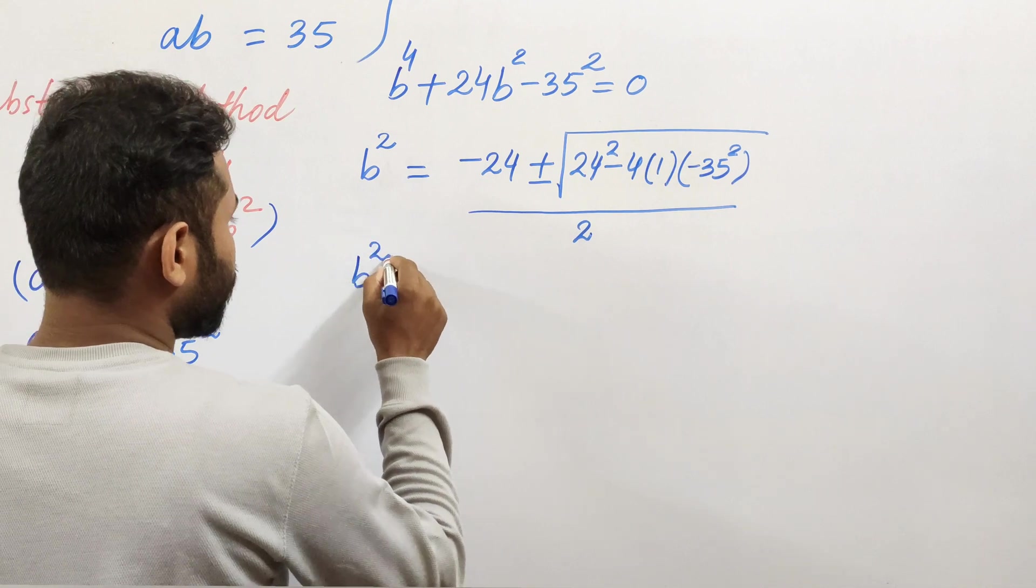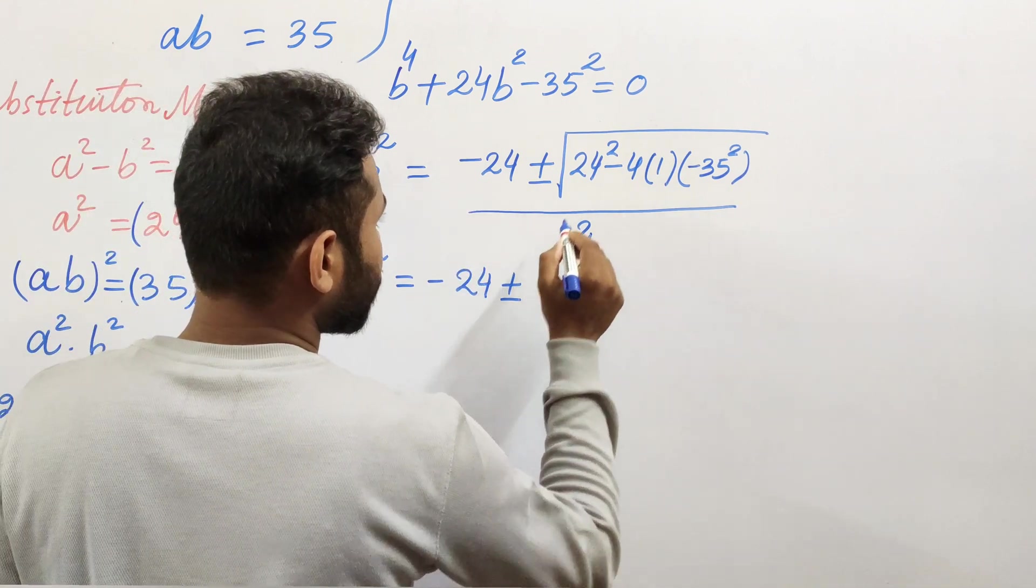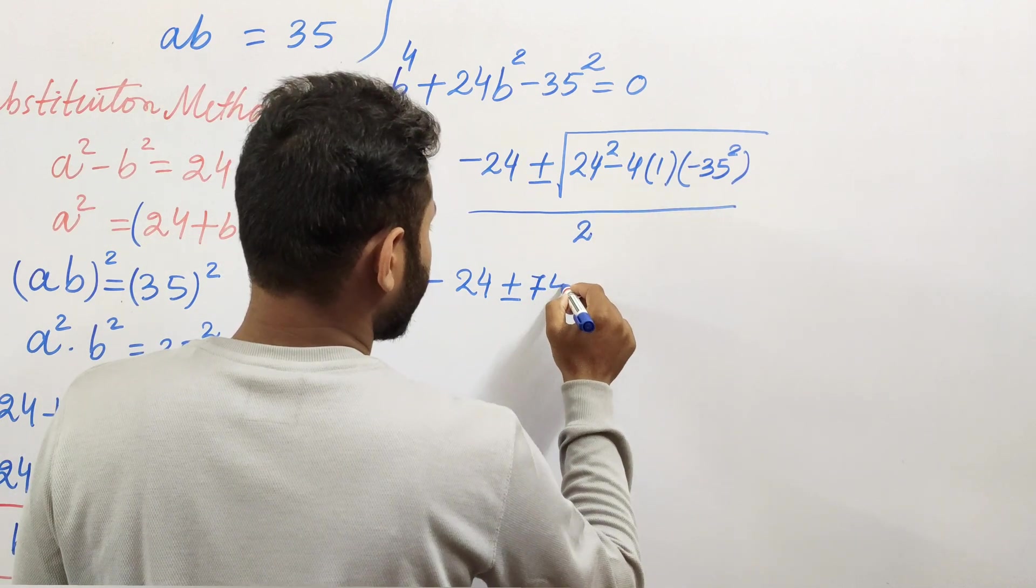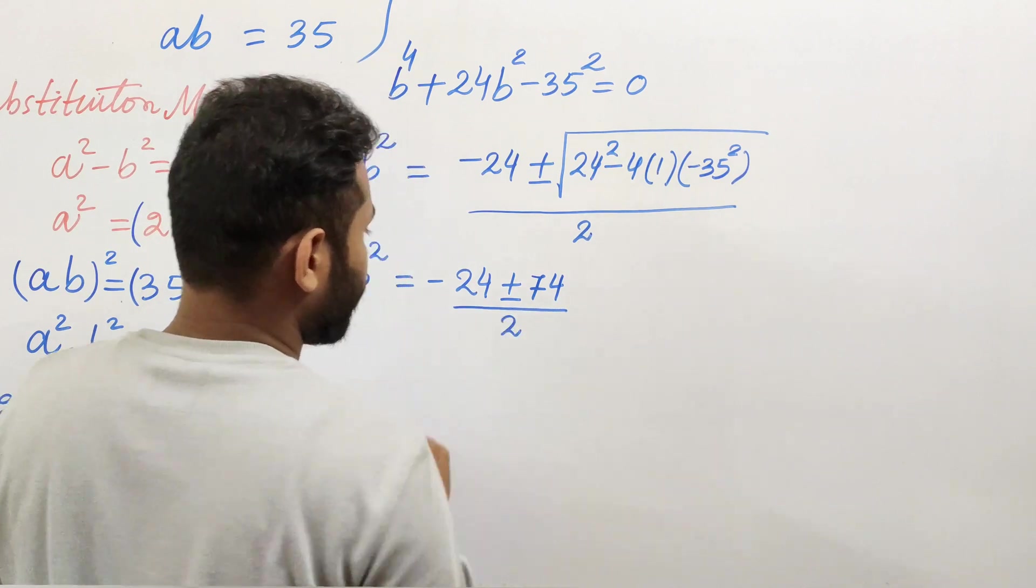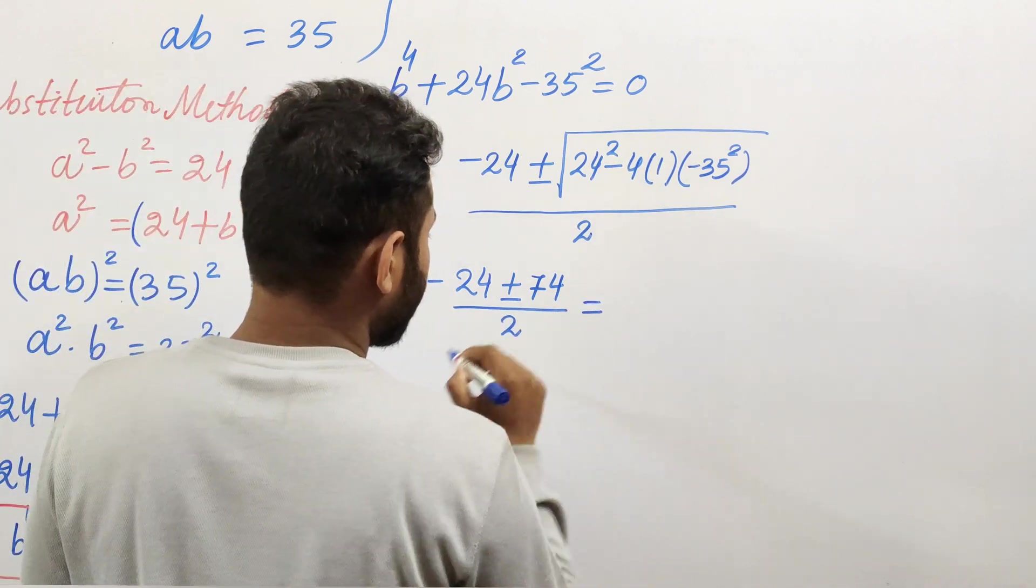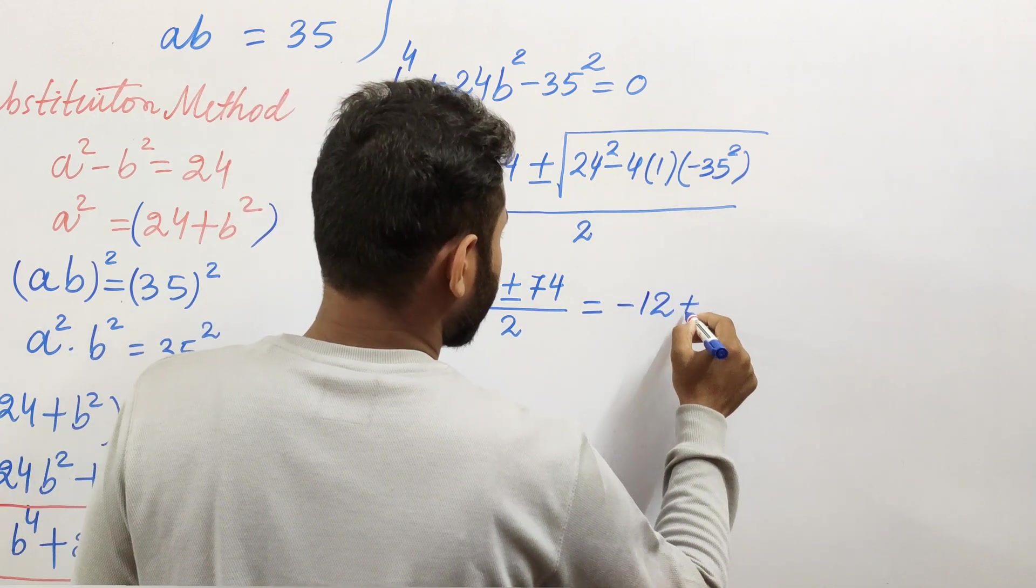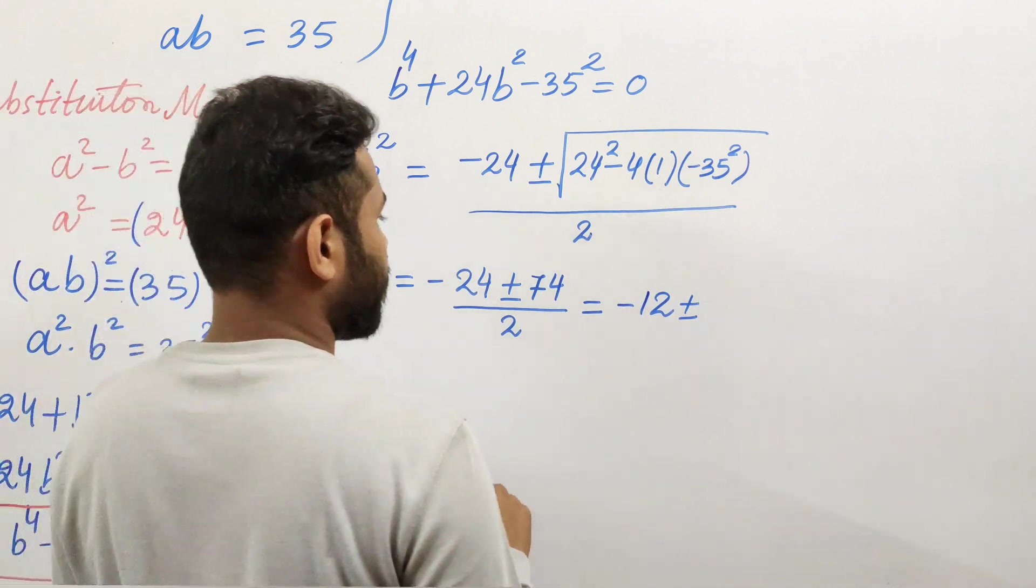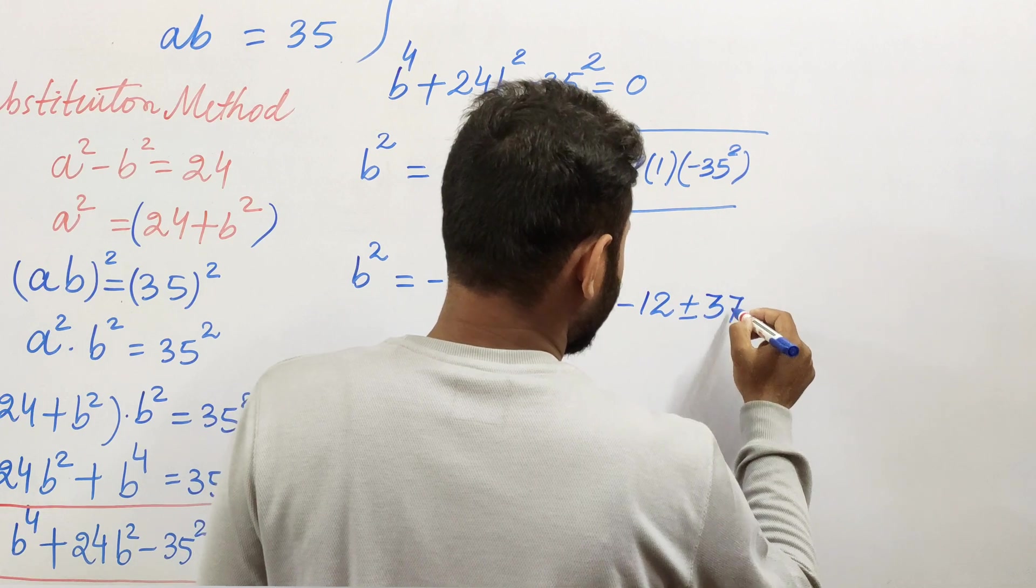If I continue solving this, the entire quantity under the square root gives me 74, divided by 2. Or you can say this gives me -12 ± 37.